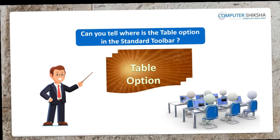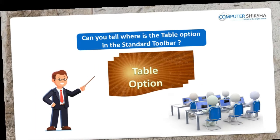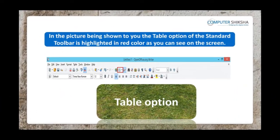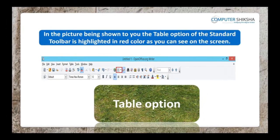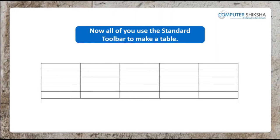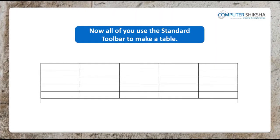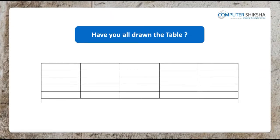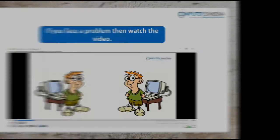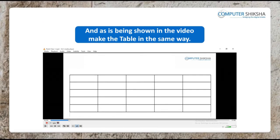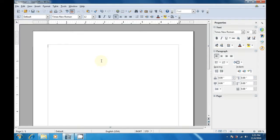Can you tell where is the table option in the standard toolbar? The table option of the standard toolbar is highlighted in red color, as you can see on the screen. Now, all of you use the standard toolbar to make a table. If you face a problem, then watch the video and as is being shown in the video, make the table in the same way. With the help of this video, let us now see how we can create a table on our writer's sheet.